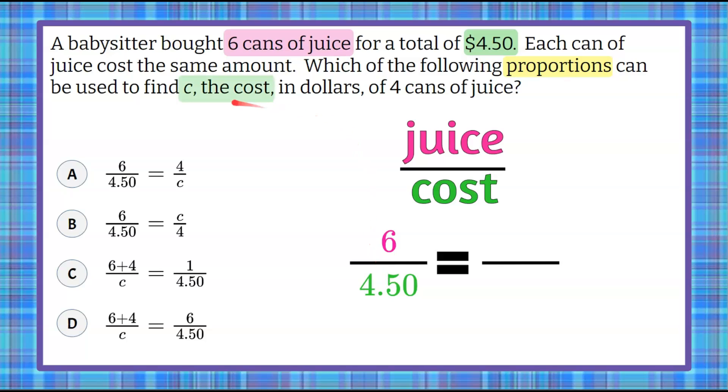Reading further into the problem we want to find c, the cost for buying four cans of juice. So again juice is our numerator. So four for four cans of juice compared to the six cans of juice over here and then our unknown, our c. We don't know how much four cans of juice costs. We would use this proportion to solve for c.